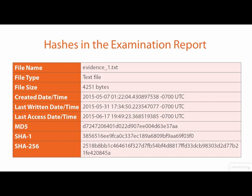Here we see a file that was recovered from a digital storage device that was entered into evidence, and the file was deemed by the forensic examiner to be relevant to the case. Meta information associated with the file is shown along with a hash value calculated using the three hashing algorithms recommended for digital forensics. All of this meta information is used to unambiguously identify this file and verify its integrity.